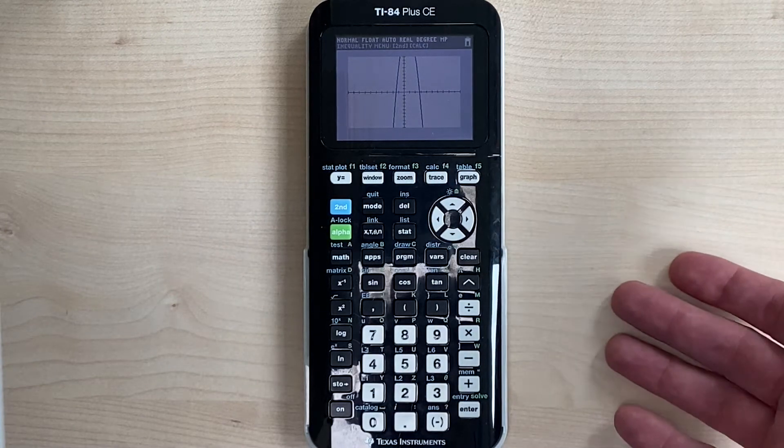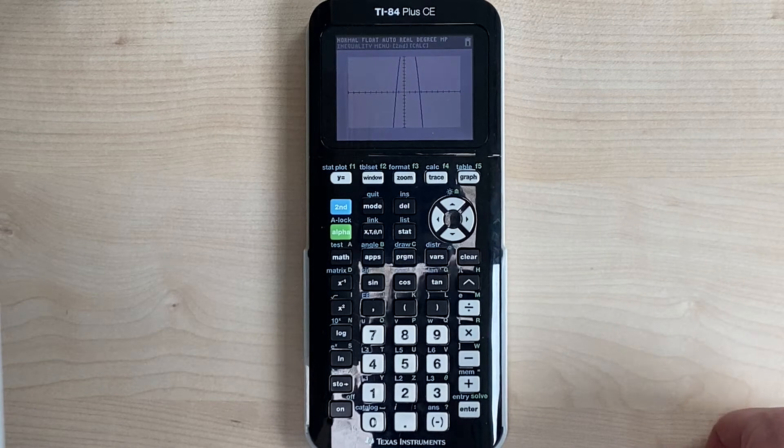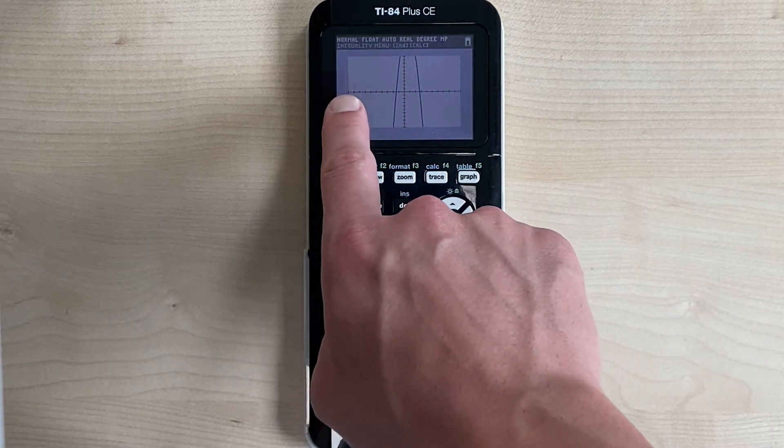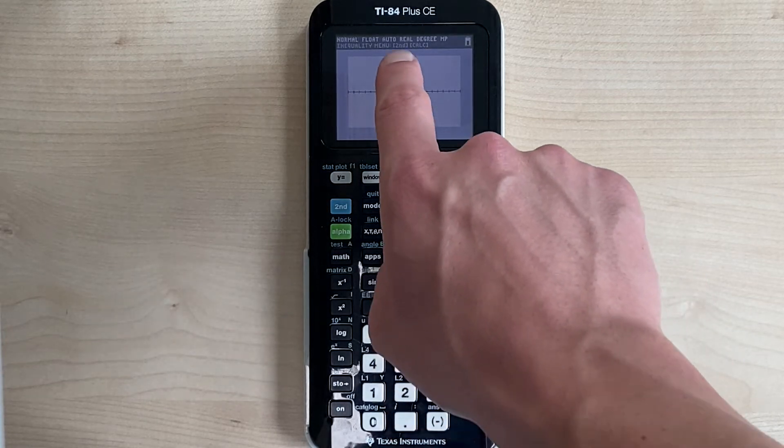So what we see right now is just the standard window. On your TI-84 Plus graphing calculator, your standard window will be on the x-axis, negative 10 to positive 10, and on the y-axis, negative 10 to positive 10.